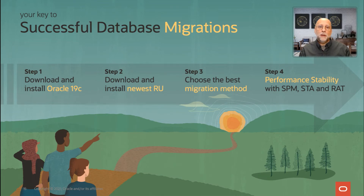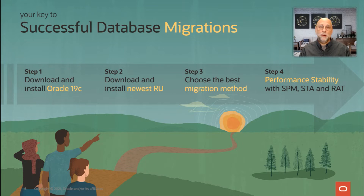The key to a successful database migration is to follow four simple steps. One: be on the right version — Database 19c. Two: make sure you're on the most recent release update, getting the most complete and current set of security and functional fixes. Three: choose the right migration method. Four: use the tools available at your disposal — some are free, like SQL Plan Management, others are widely adopted packs like the Tuning Pack — to ensure good performance after your migration.